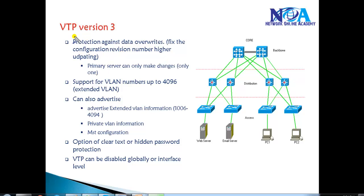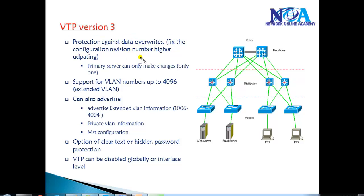The first major enhancement in VTP version 3 is protection against data overrides. In VTP version 1 and version 2, updates to VLAN information are based on the revision number.